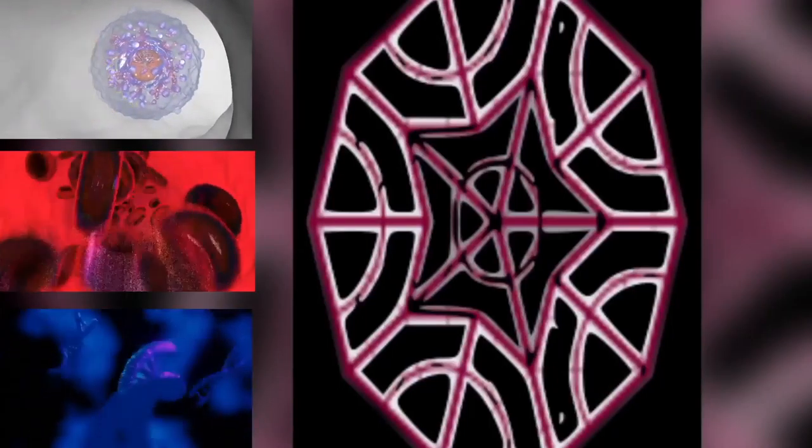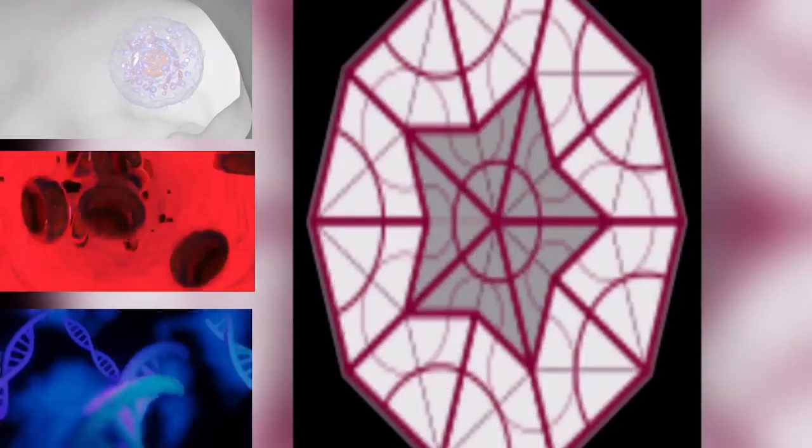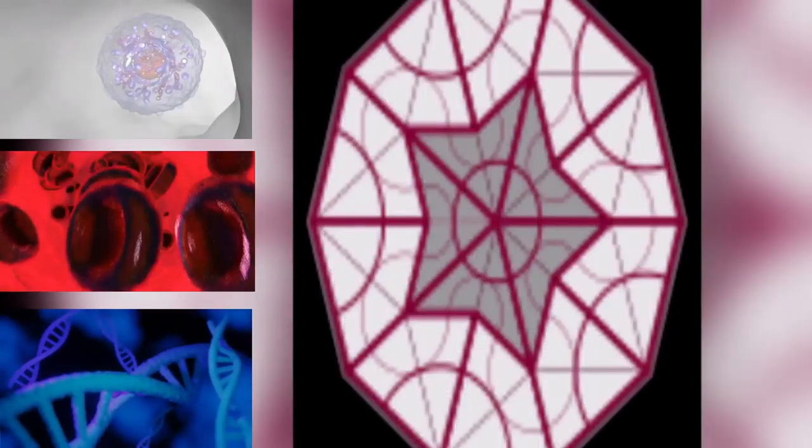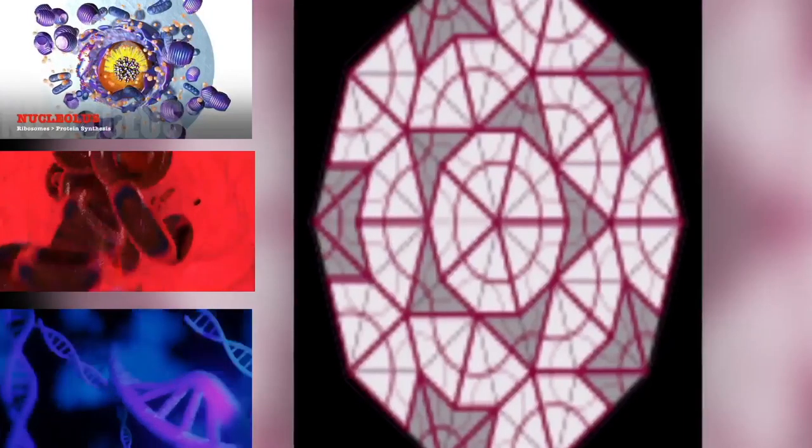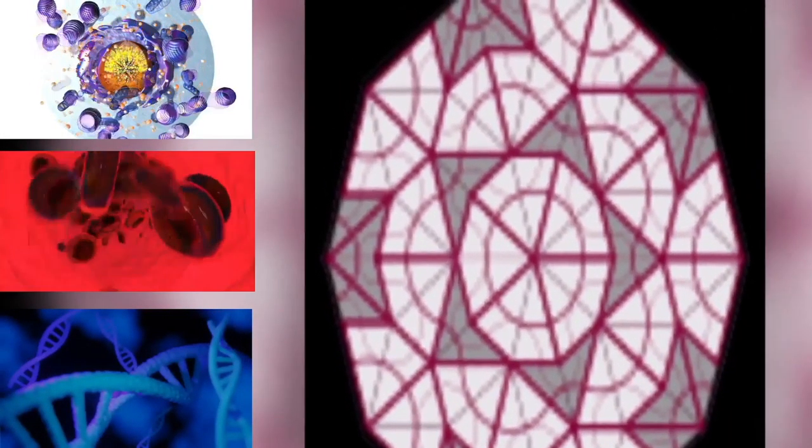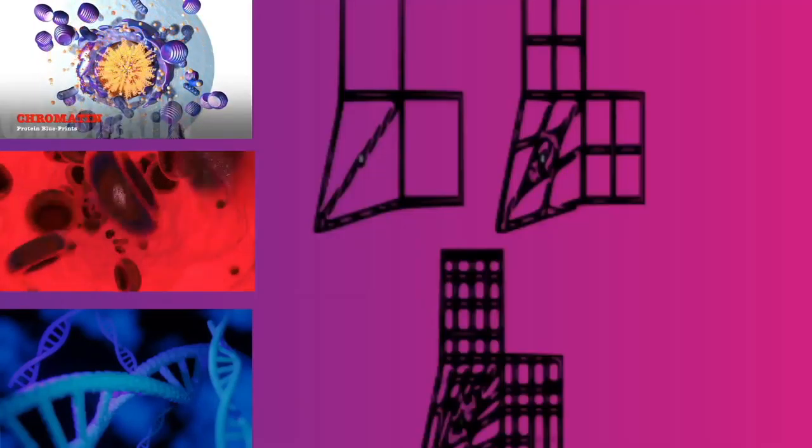While prokaryotes are considered strictly unicellular, most conform stable aggregate communities. When such communities are encased in a stabilizing polymer matrix, slime, they may be called biofilms.